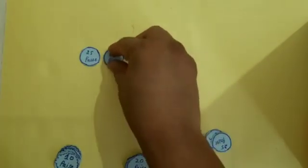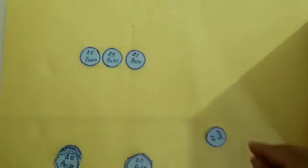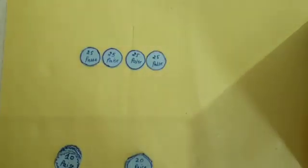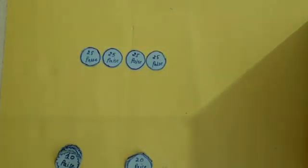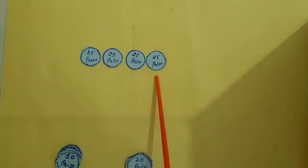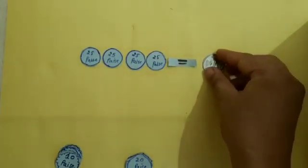Now we will count 25 paise coins. 25 paise, 25 and 25 is 50 paise, 50 and 25 is 75 paise, 75 and 25 is 100 paise. 100 paise is equal to 1 rupee. How many 25 paise coins make a rupee? Let's count: 1, 2, 3, 4. That means 4 coins of 25 paise make 1 rupee.